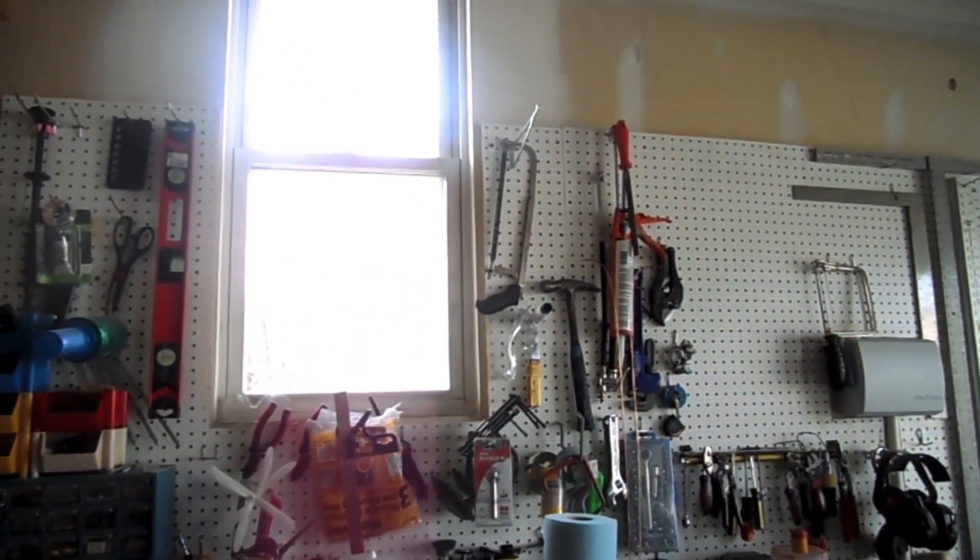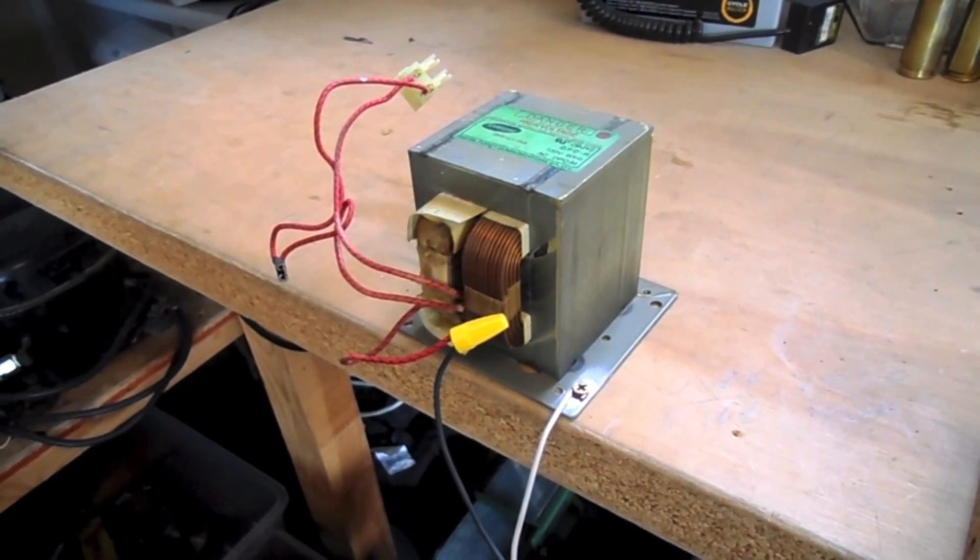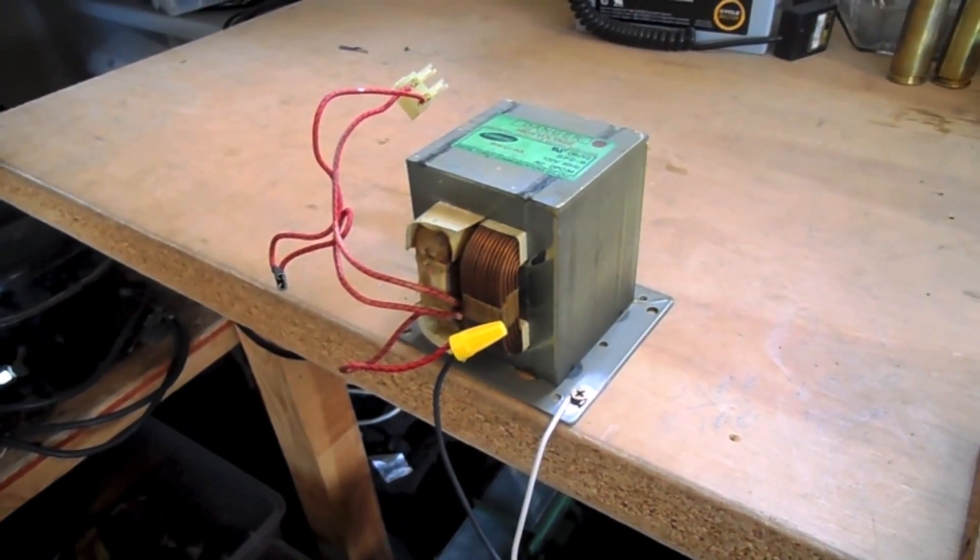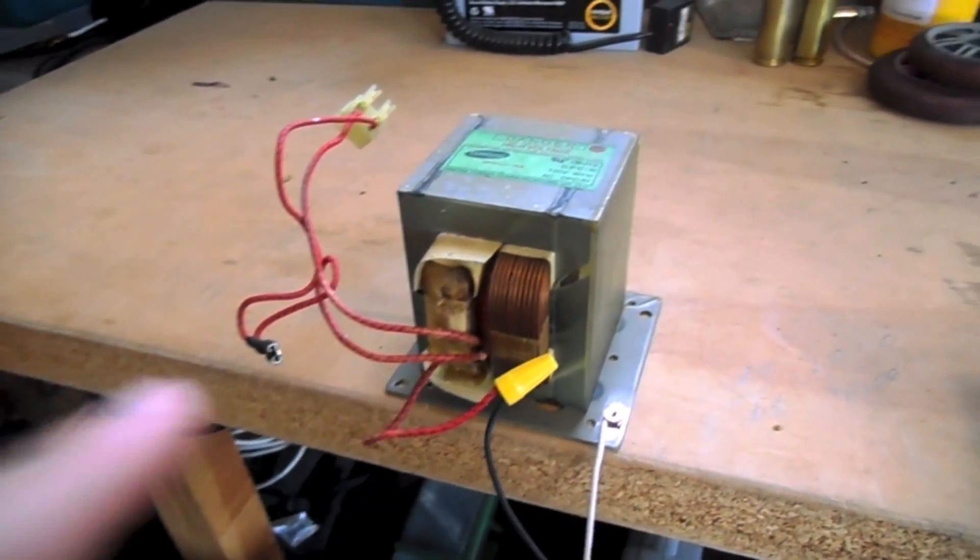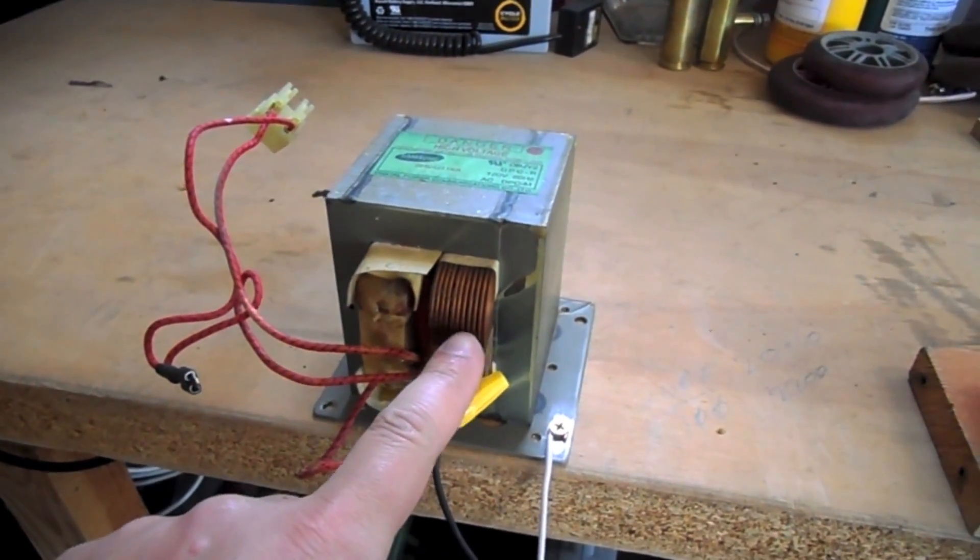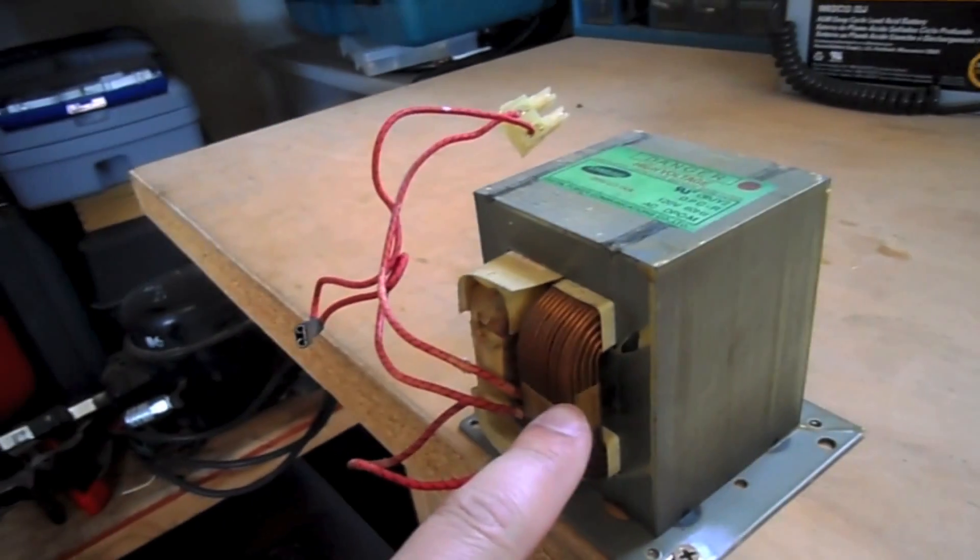It all starts with a microwave. This is a transformer recovered from a non-working microwave. To generate the high voltage needed to power the microwave, this transformer converts 110 volts of house power into thousands of volts.